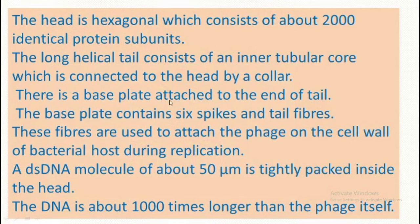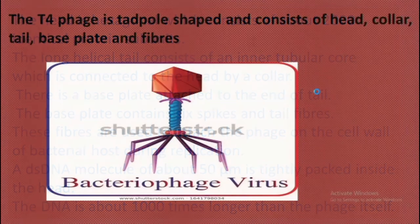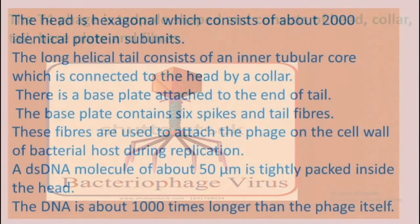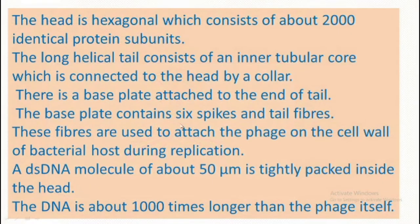There is a base plate attached to the end of the tail. The base plate contains six spikes and tail fibers. These fibers are used to attach the phage onto the cell wall of the bacterial host during replication. So during multiplication, the phage particle attaches to the cell wall using the tail fiber.